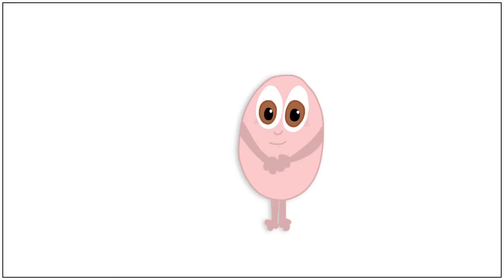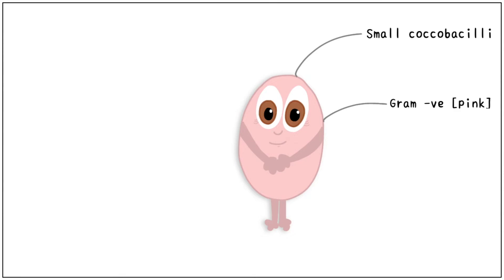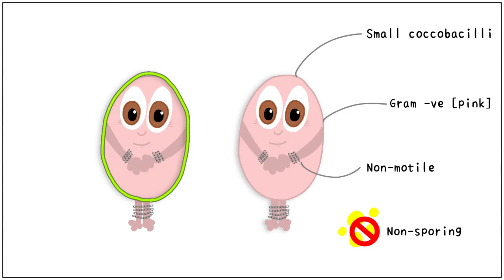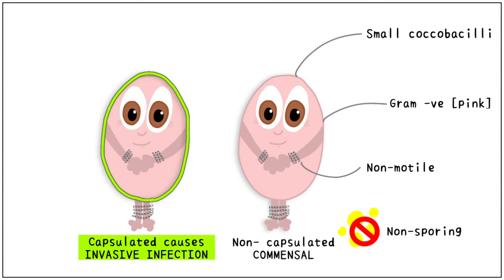It is a small coccobacilli and it is pink in colour or gram negative. Its hands and legs have been tied up, indicating it is non-motile. It is a non-sporing organism. It exists in two forms: a non-capsulated form and a capsulated form.